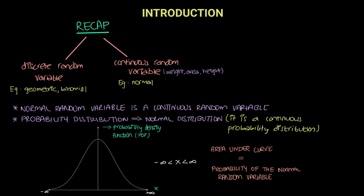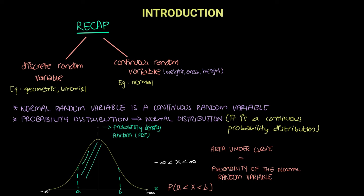For example, if you need to find the probability of a random variable from a to b, with a somewhere on the left and b somewhere on the right, you simply need to find the area under the curve between those two points. This shaded area under the curve from a to b gives you the probability from a to b.